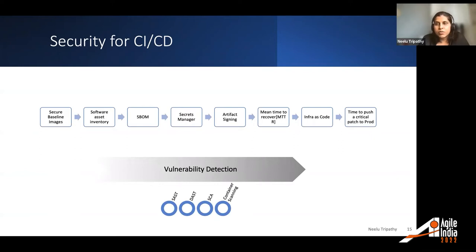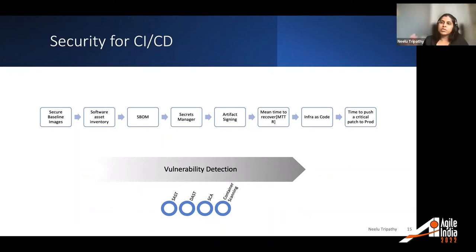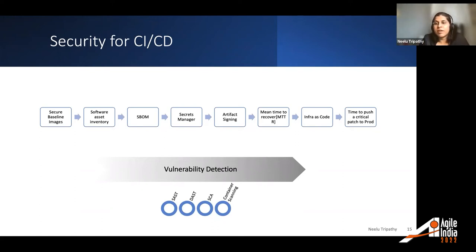Having a secrets manager is also very important — developing the practice of not checking in secrets at all is preventative rather than detective, which is a more mature state. Artifact signing helps with integrity. Infrastructure as code makes it much easier to have a secure configuration and make it repeatable. Engineering metrics like mean time to recover or time to push a critical patch to production are important to limit the blast radius once a critical issue is found.